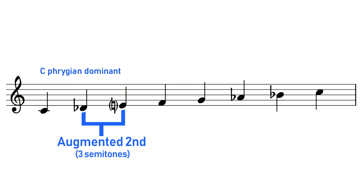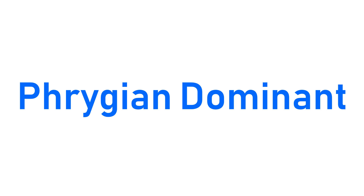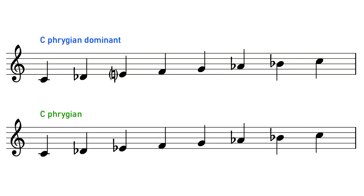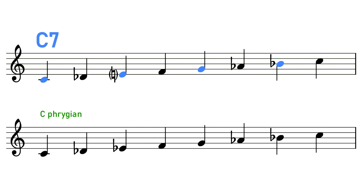Most western scales only use steps of semitones and tones, so this wider interval of three semitones gives the Phrygian Dominant Scale a curious, unusual sound. We call the scale Phrygian Dominant because it's just like the regular Phrygian Scale, however, because it has this major third here rather than the typical minor third, we can now build a dominant seventh chord on the tonic note — hence Phrygian Dominant.